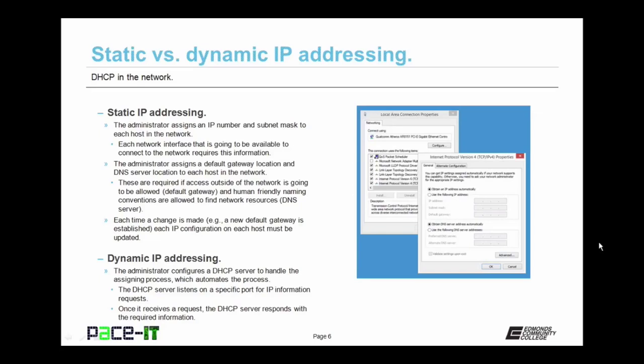Each time a change is made — as in a new default gateway is established — each IP configuration on each host must be updated. That's why it becomes rather cumbersome and complicated as the network grows. With dynamic IP addressing, the administrator configures a DHCP server to handle the assignment process, which automates the process and eases management. The DHCP server listens on a specific port for IP information requests, and once it receives a request, it responds with the required information.